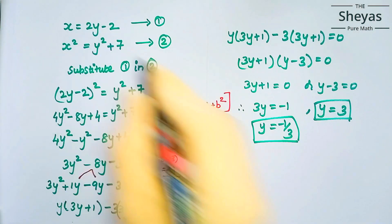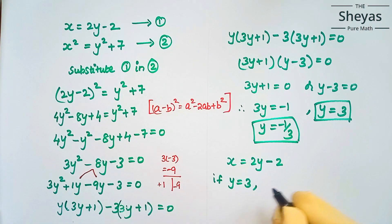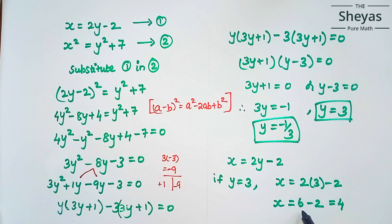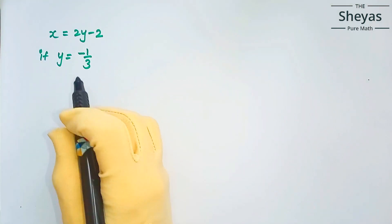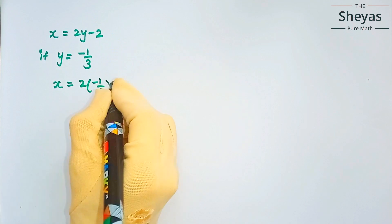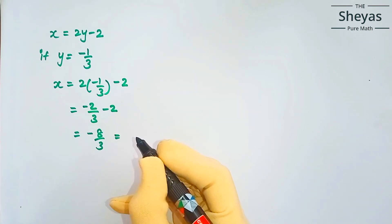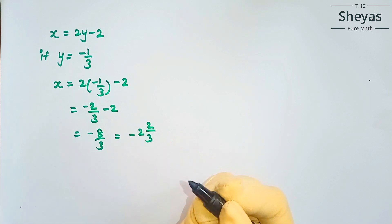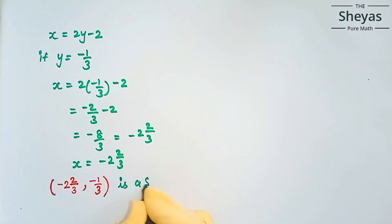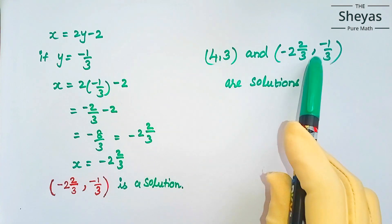Using equation 1, x = 2y − 2, to find the x values: if y = 3, then x = 2(3) − 2 = 6 − 2 = 4. If y = −1/3, then x = 2(−1/3) − 2 = −2/3 − 2 = −8/3, which as a mixed fraction is −2⅔. So the two pairs of solutions are (4, 3) and (−2⅔, −1/3).